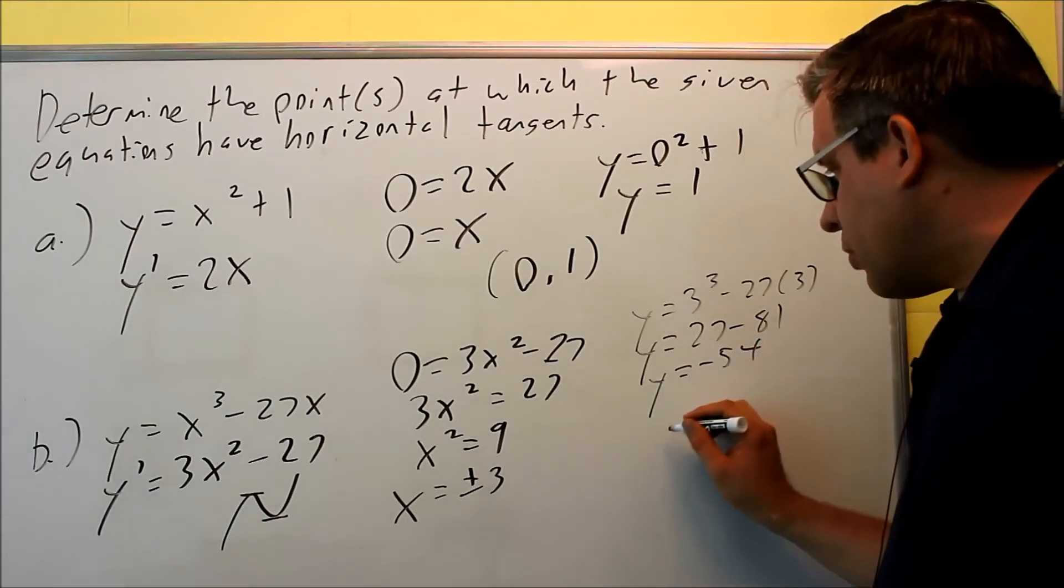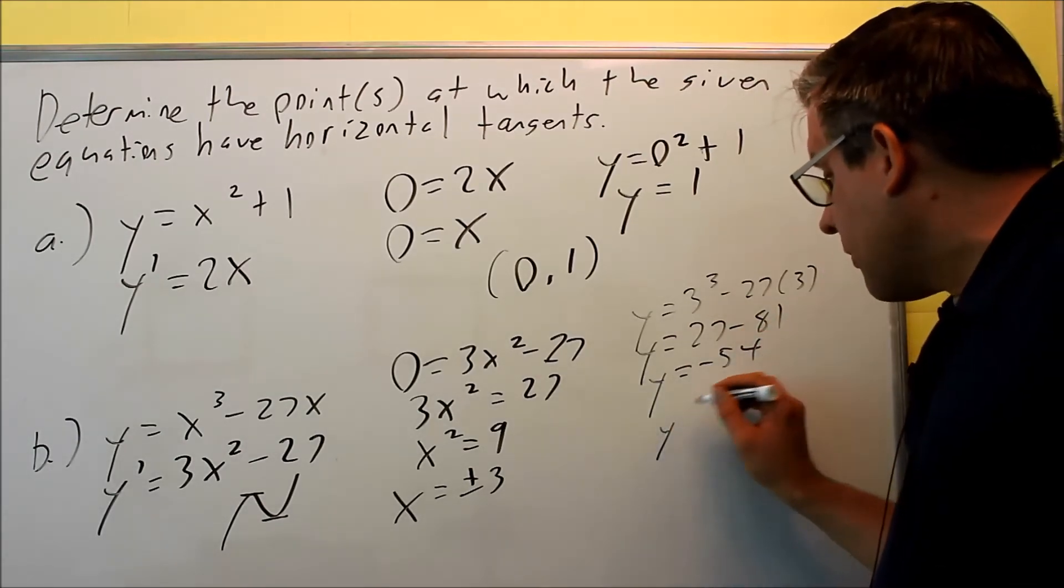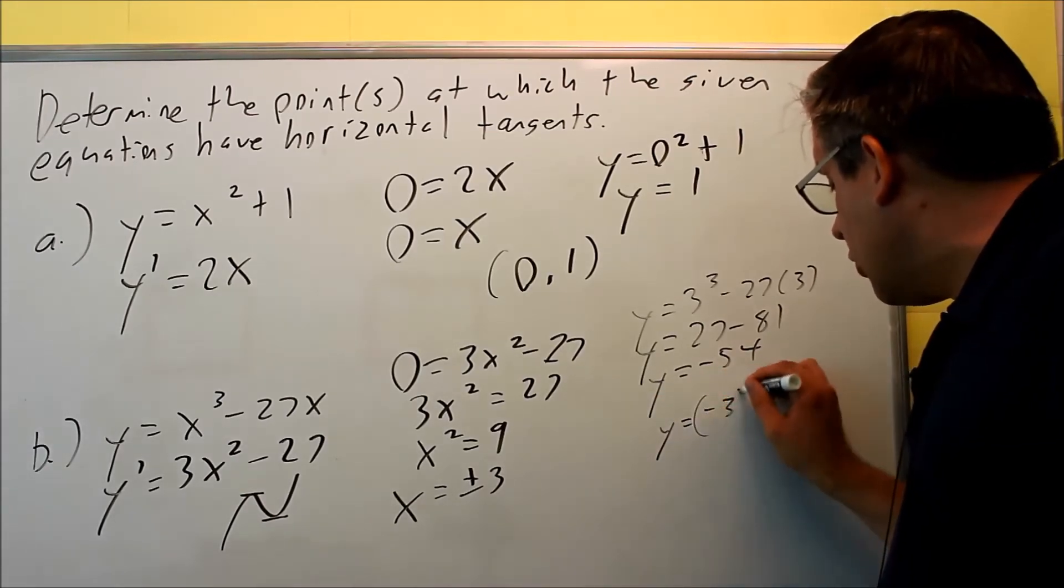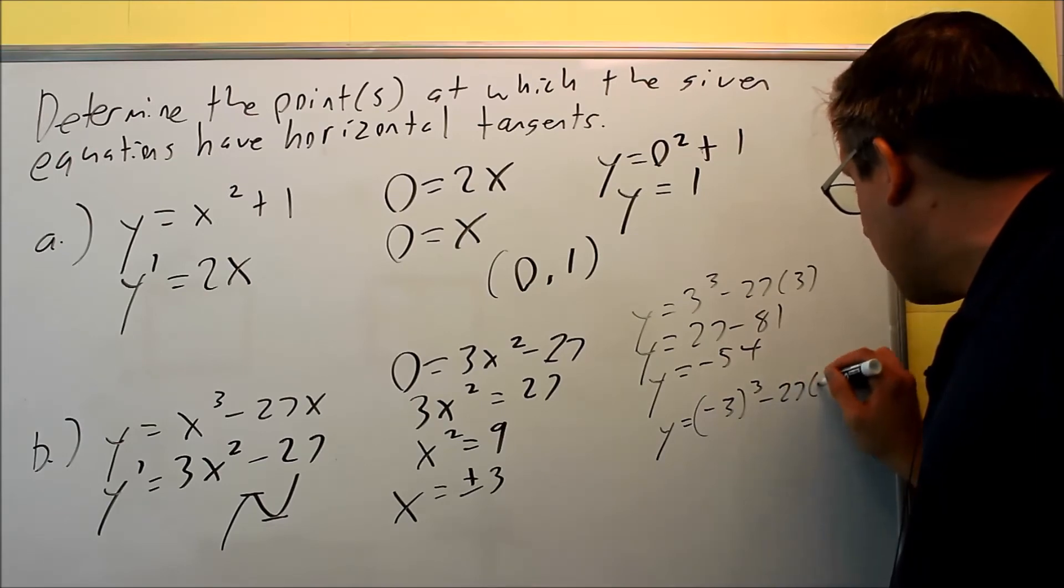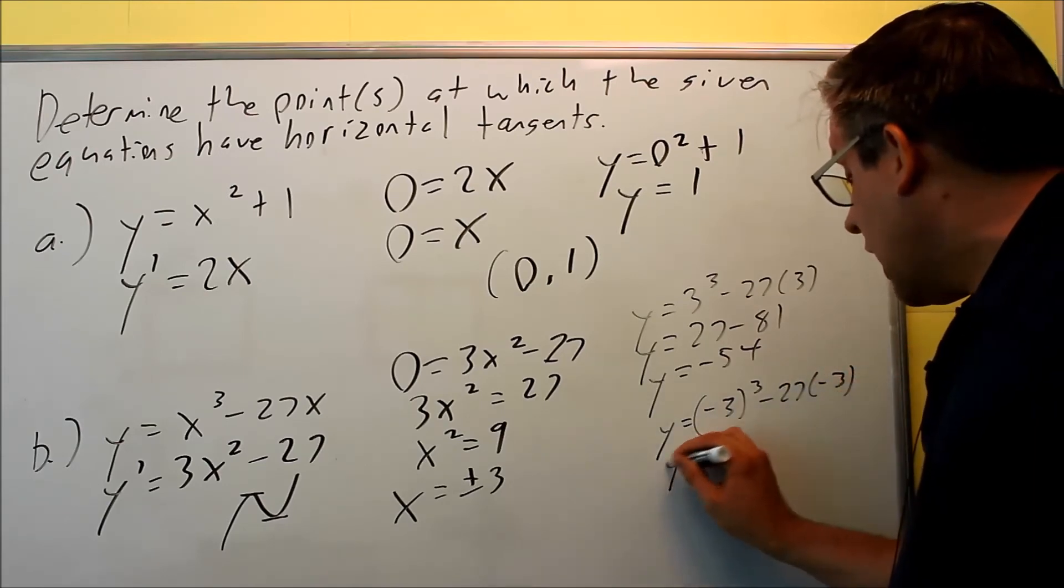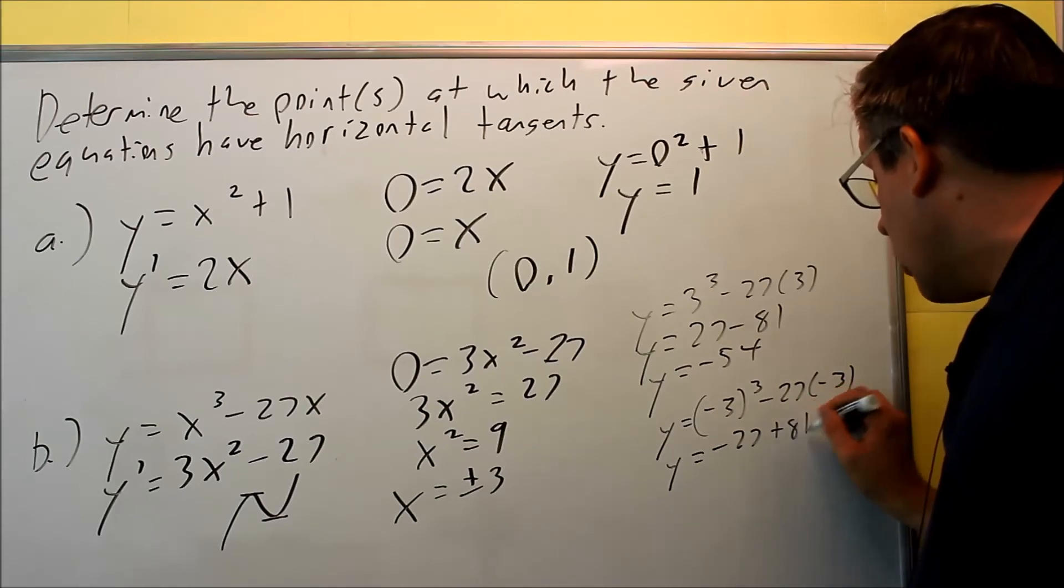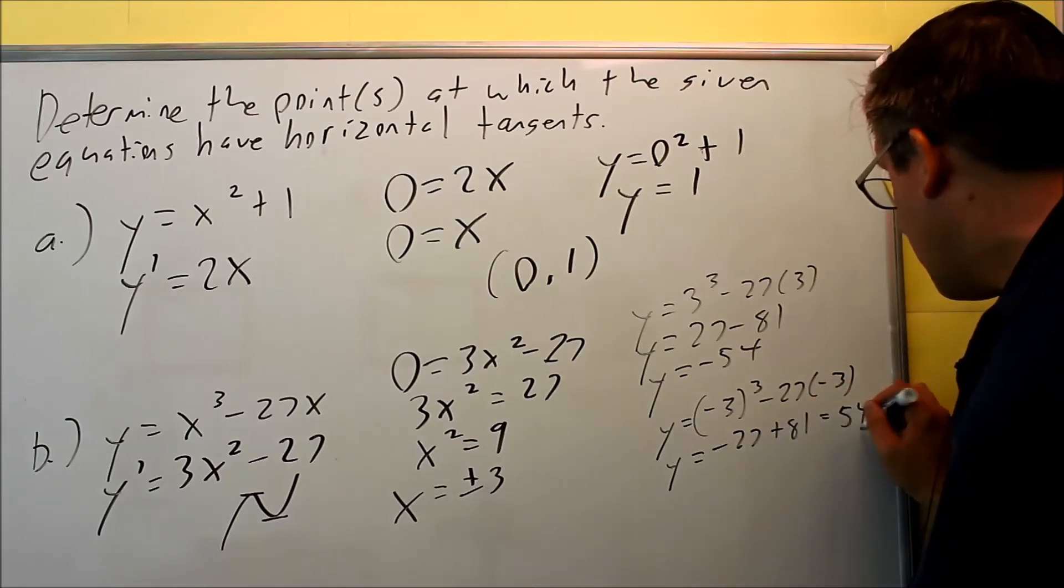And if you plug in the negative 3 in there, you're going to get negative 3 cubed minus 27 times negative 3, and this you're going to get negative 27 plus 81, which is positive 54.